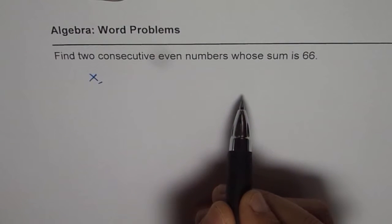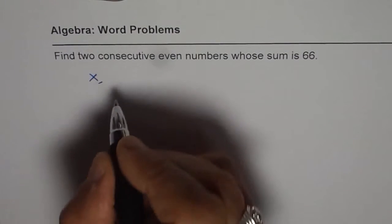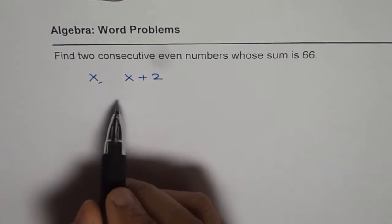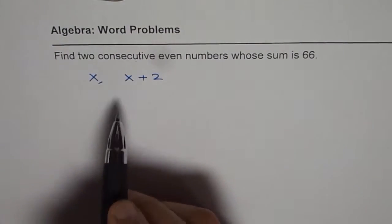So, 2 plus 2, next is 6, 4 plus 2. So, the next even number should be x plus 2, and that is how you define consecutive even numbers.